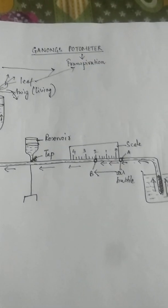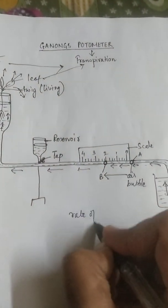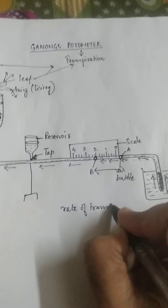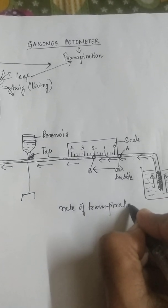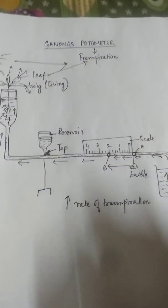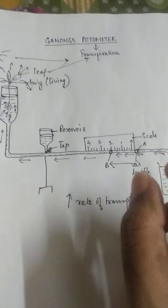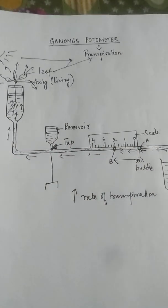And the scale is kept over here to understand or to help me out that how much distance this air bubble has traveled in what period of time. And that will give us an idea about the speed or the rate of transpiration.